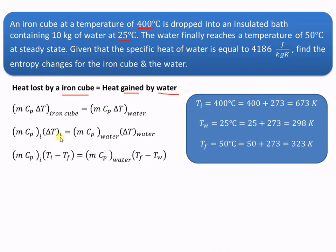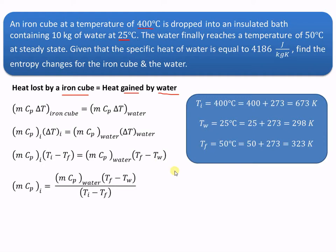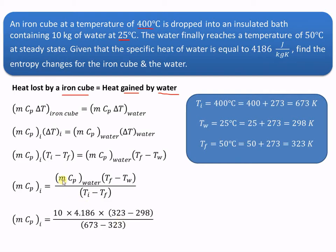The change in temperature for the iron cube is its initial temperature minus the final temperature, and for water it is the final temperature minus the initial water temperature. We can find the heat capacity MCP for the iron cube as MCP_water × (Tf − Tw) / (Ti − Tf). Substituting: mass of water is 10 kg, CP of water is 4.186 kJ per kg Kelvin, Tf is 323 K, Tw is 298 K, and Ti of iron is 673 K.